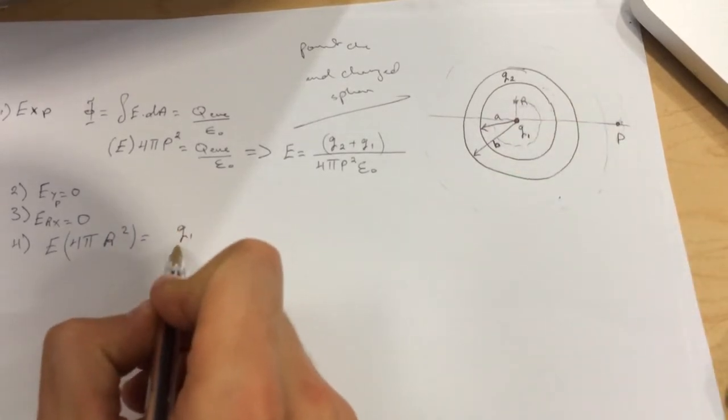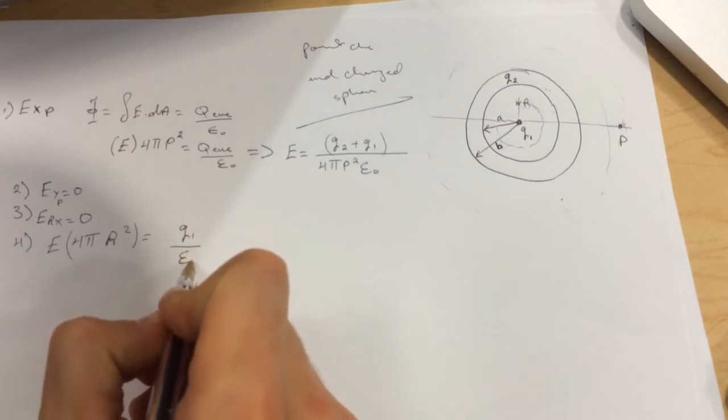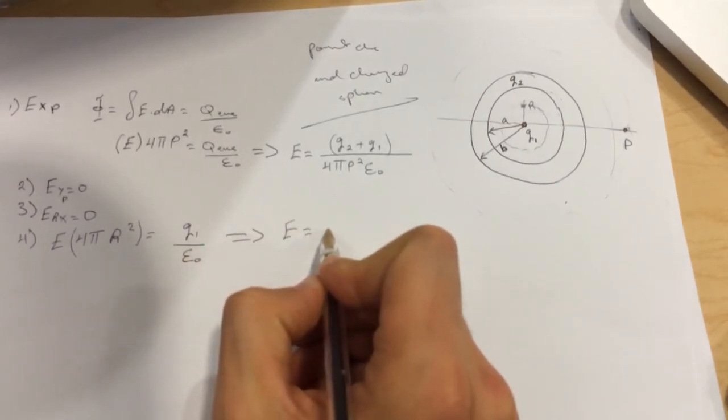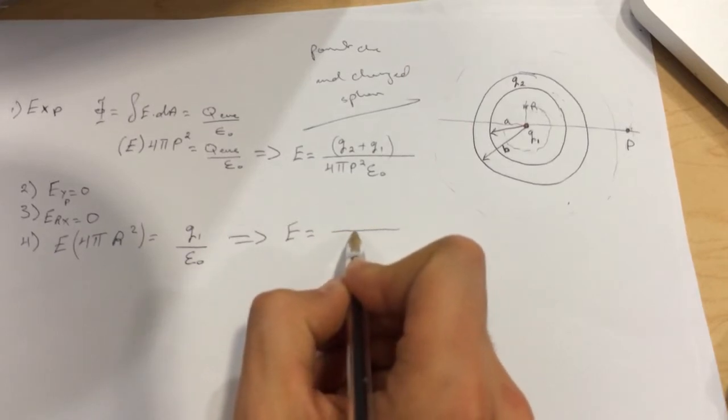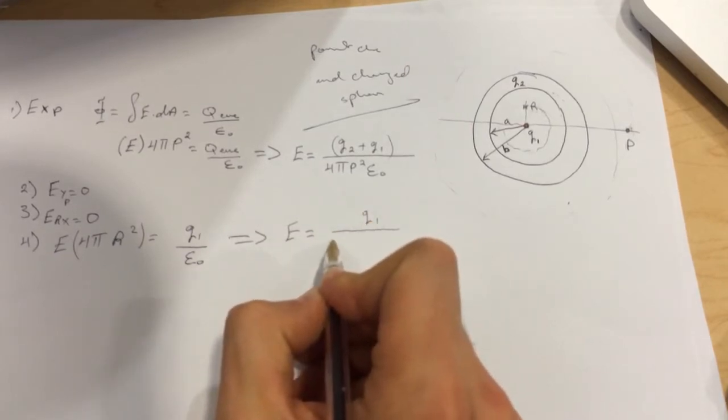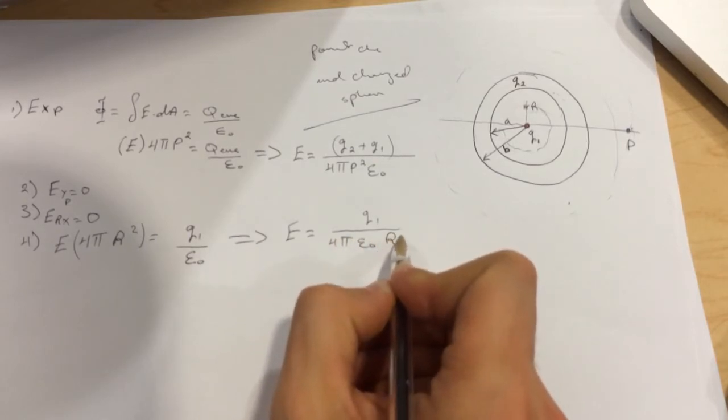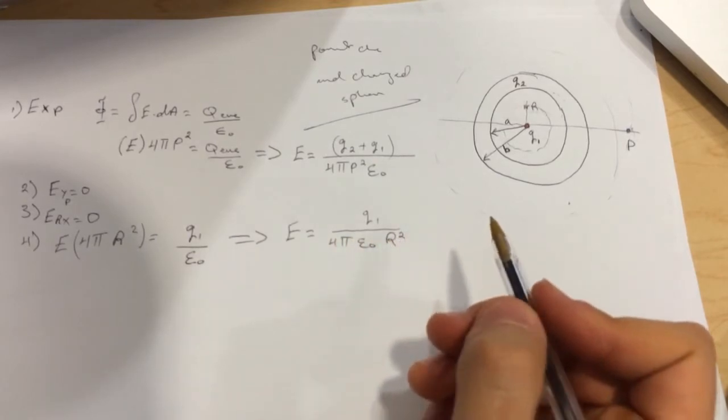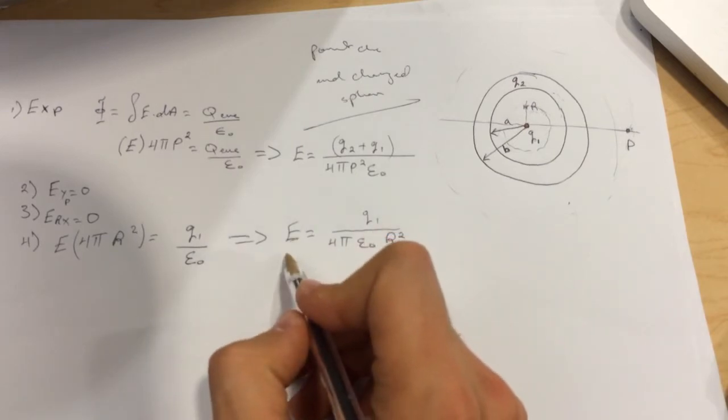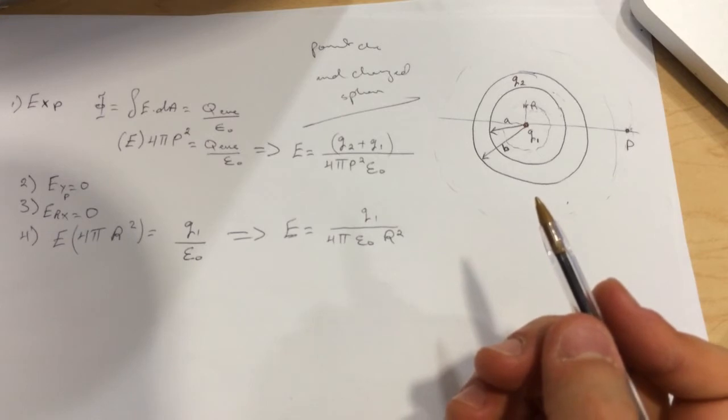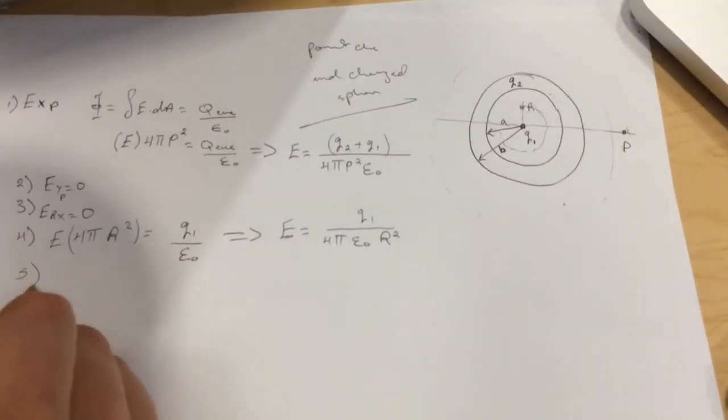The Q enclosed, if you look closely, we're not having Q2 in this one. We're only going to have Q1 right inside this Gaussian surface, so it's only Q1 divided by epsilon naught.